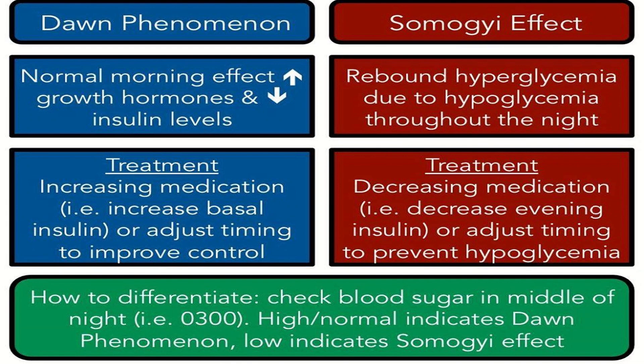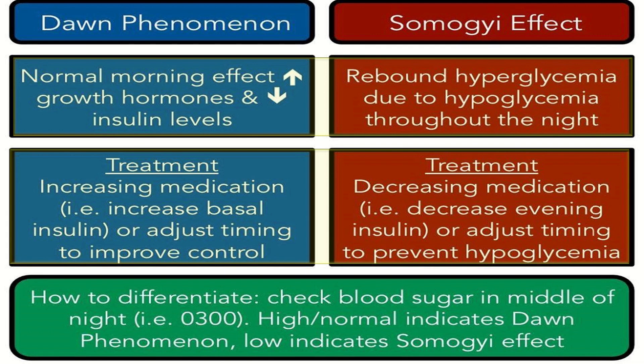This chart shows the difference between dawn phenomena and Somogyi effect. In dawn phenomena there is a normal morning effect with increased growth hormone and decreased insulin levels. In Somogyi effect there is rebound hyperglycemia due to hypoglycemia throughout the night. Treatment of dawn phenomena is increasing basal insulin or adjusting timing; in Somogyi effect we decrease the evening insulin dose. To differentiate between the two, check the 3 AM glucose level.